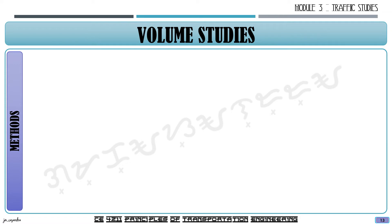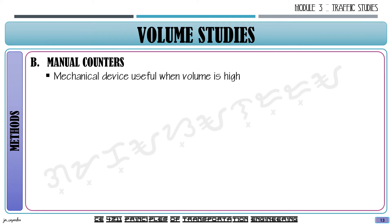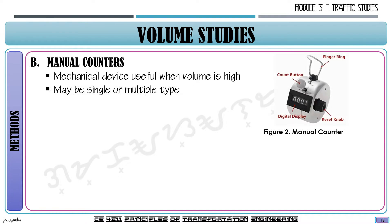The next method is using manual counters — a mechanical device useful for high volume traffic where tallying is no longer applicable. It may be a single or multiple type manual counter. You press a button every time a vehicle passes, and the count changes. There is a reset button so that after each 15-minute interval, you reset and start counting again from 1.